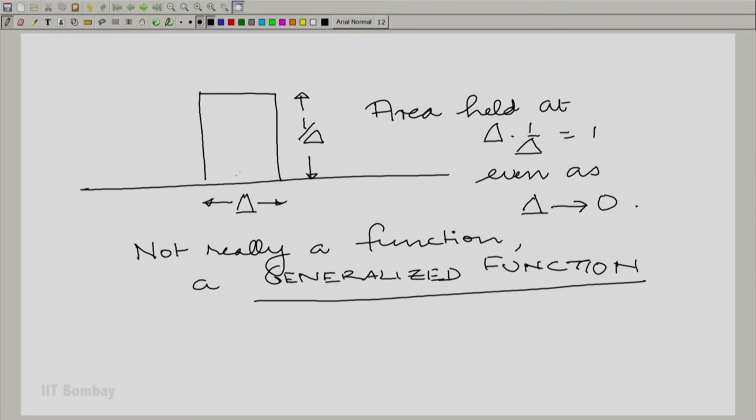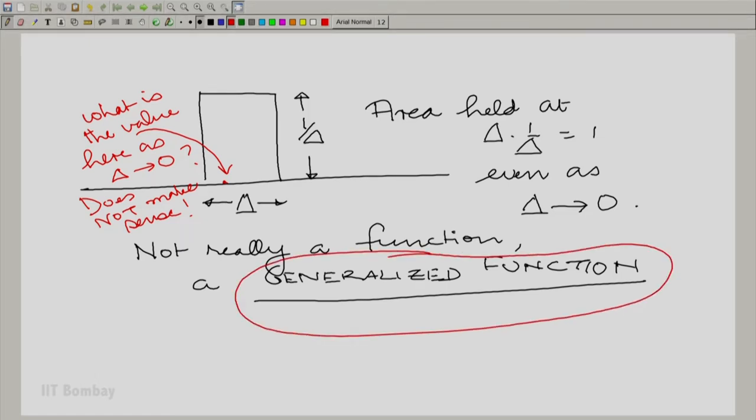Let us go back to the figure to understand. So if I were to choose a point somewhere here and if I were to ask what is the value as delta, what is the value here as delta tends to 0 does not make sense. That is what is lacking in thinking of this as a function that is why it is called a generalized function.